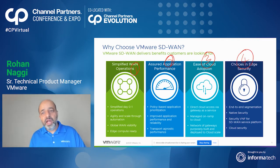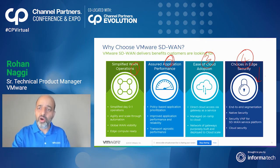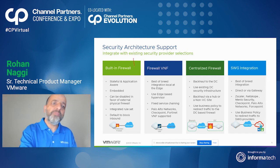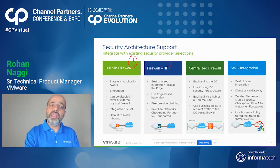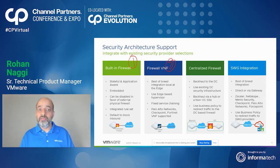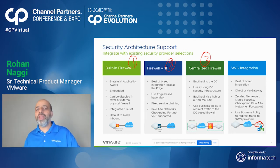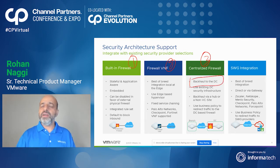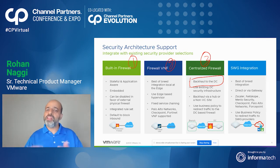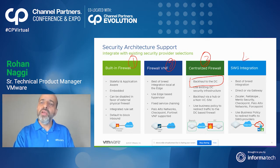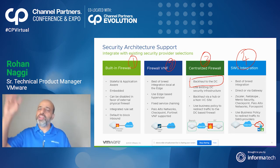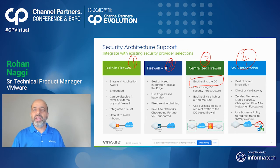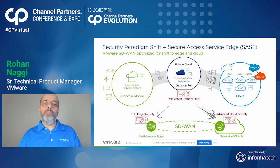VMware SD-WAN provides flexibility for security. The first option is the built-in firewall. The second is to instantiate a third-party security firewall — we have partnered with best-of-breed security vendors. The third is a centralized firewall, an extension at the data center, following the legacy approach, which we still support. The fourth goes hand in hand with the SASE approach — the secure web gateway integration, where all security services are provided in the cloud and SD-WAN provides the connection to the cloud.